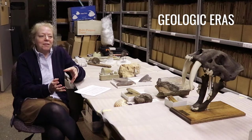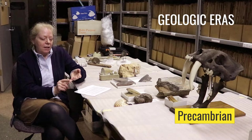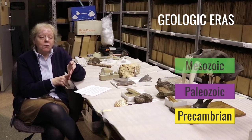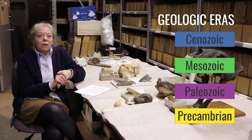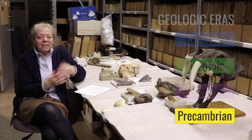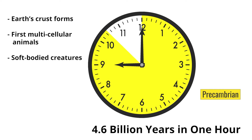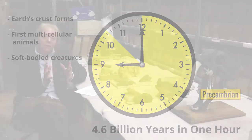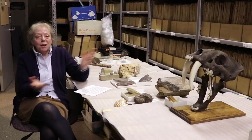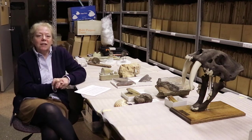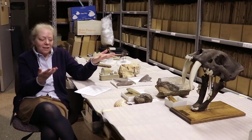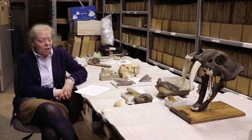The eras we usually refer to are: first, a catch-all group called the Precambrian, and then the official eras — the Paleozoic, the Mesozoic, and the Cenozoic. The Precambrian is essentially everything from when we first get crust on the earth to when you first start getting multicellular animals and soft-bodied creatures. It's billions of years — a huge catch-all. The official eras themselves are each hundreds of millions of years.